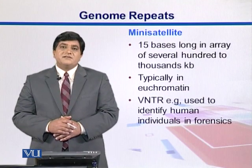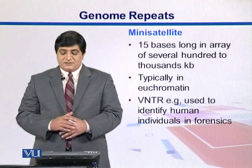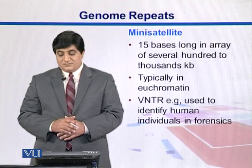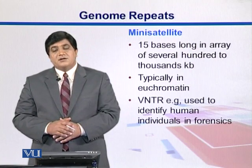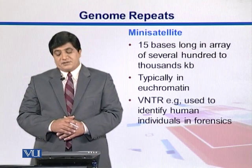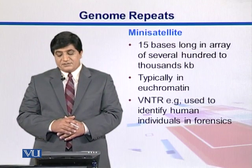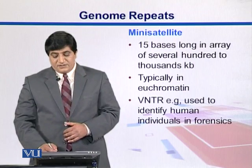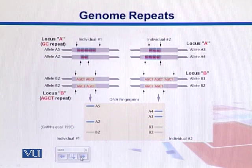Minisatellites are 15 bases long, present in arrays of several hundred to several thousand kilobases, and are typically found in the euchromatin region. An example is VNTR minisatellites.